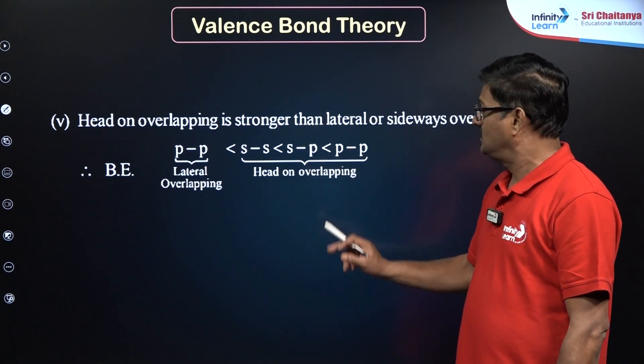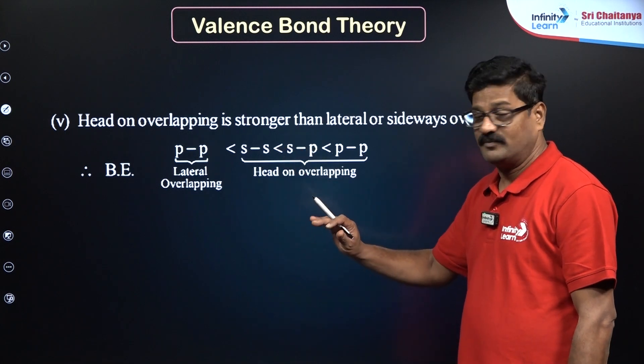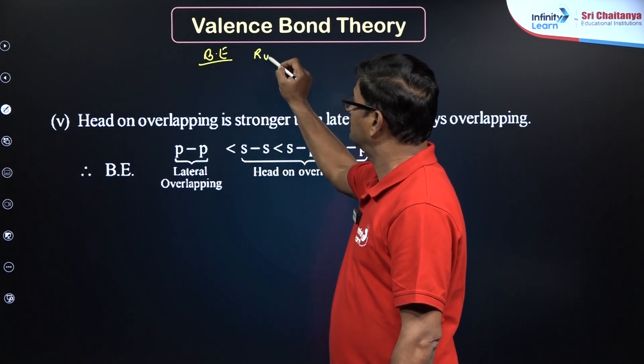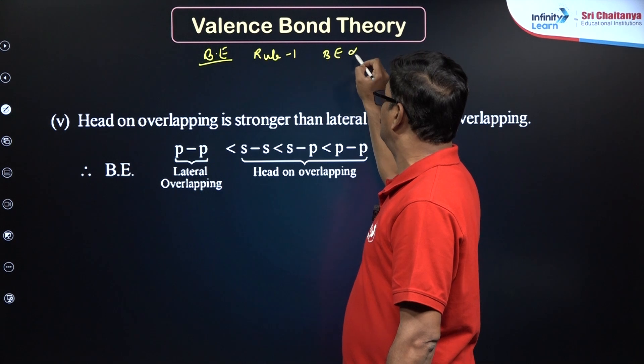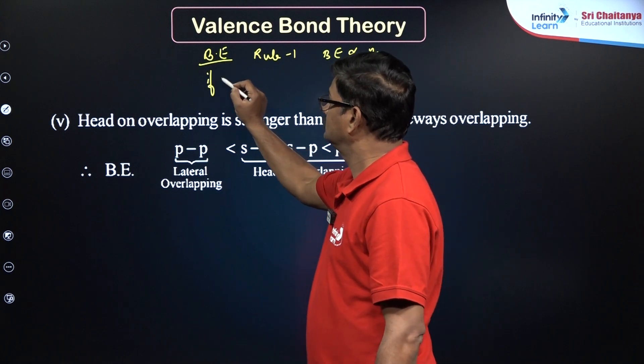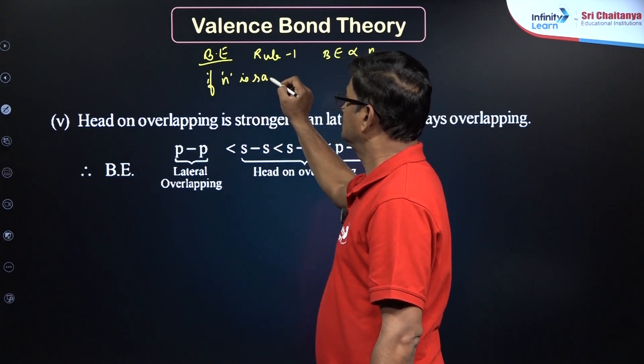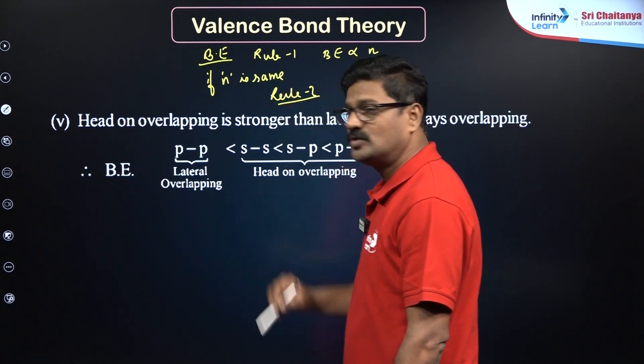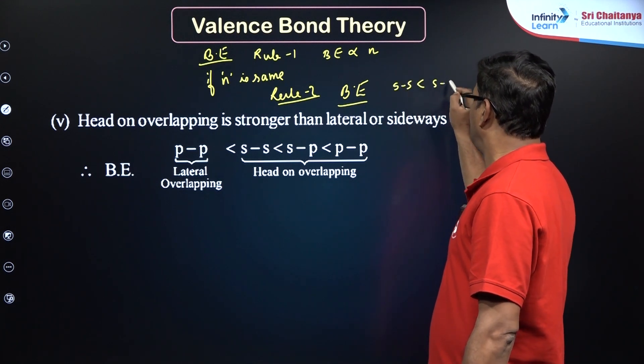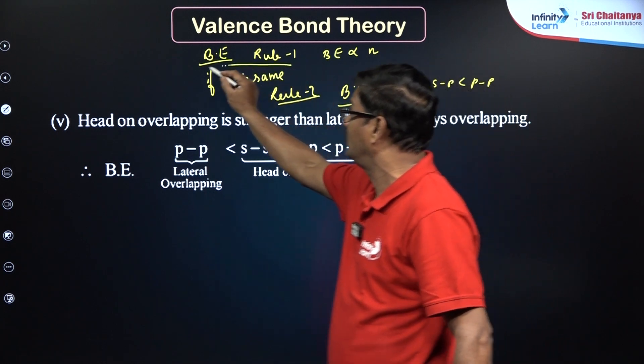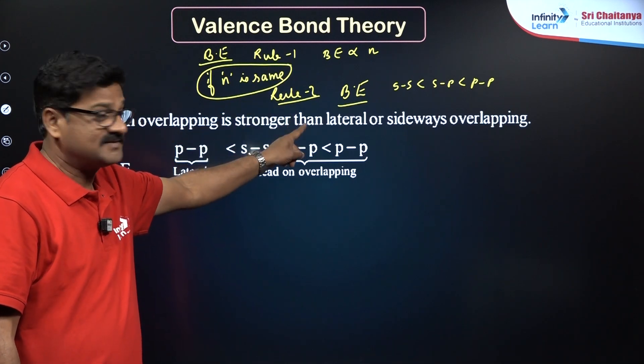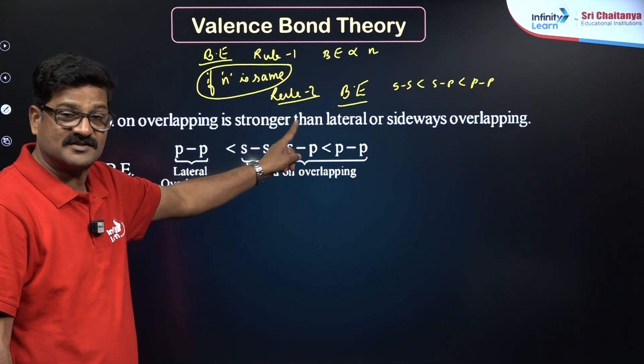First, when you talk about the bond energy, I just want to give you a simple trick. Rule 1: bond energy is inversely proportional to N, principal quantum number. If N is the same, use rule 2. In rule 2, we can say bond energy: SS is less than SP is less than PP. If the N is the same, then only you can use this rule 2. And based on that, I can say so far in the NEET examination a couple of times questions have been asked, mind it.